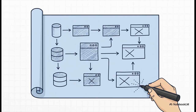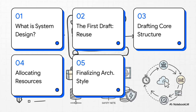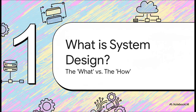In the software world, that plan has a special name: System Design. It's the architectural blueprint that developers create to make sure that whatever they build is strong, can grow, and won't just fall over. Here's our game plan for today: we'll figure out what System Design actually is, see what we can borrow from existing plans, sketch out our core structure, figure out our resources, and pick the perfect architectural style for the job.